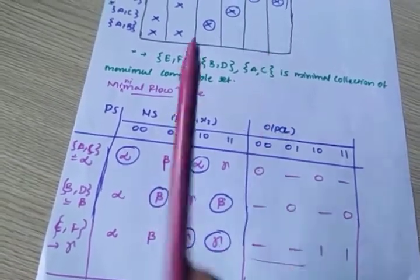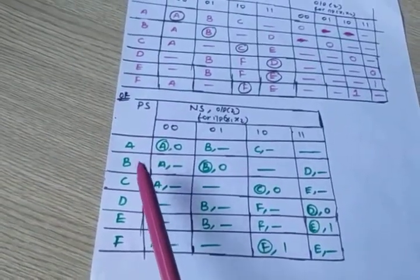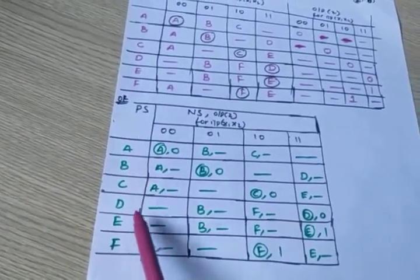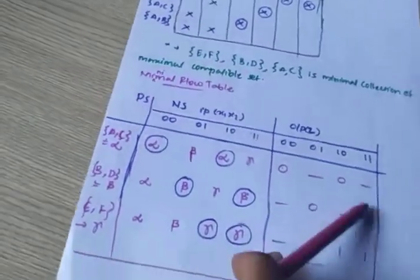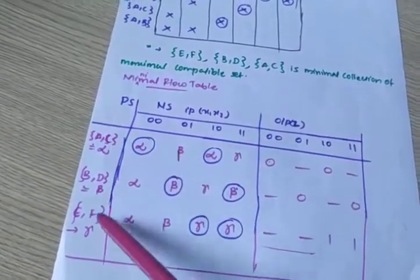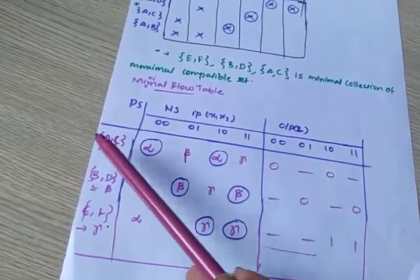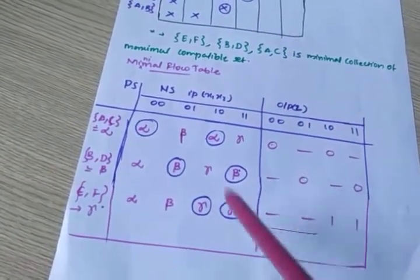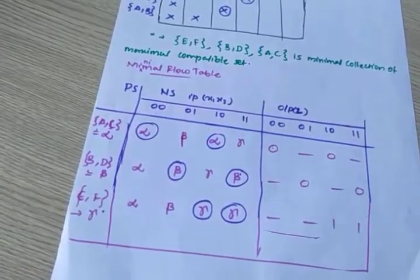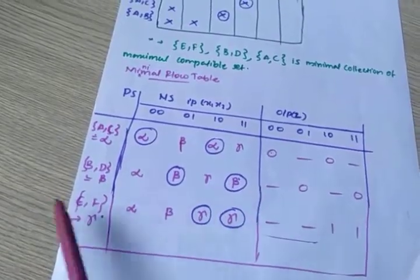So what is the difference? Initially in the flow table we had seven states — A through F, seven states. But after the reduction, those seven states are reduced into just three states: ALPHA, BETA, and GAMMA. This is the minimum flow table — the reduced flow table. The seven states are mapped into just three states, so the analysis becomes very easy. The unwanted or unstable states are eliminated, and finally we filtered out the three pure states.